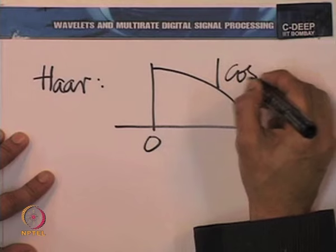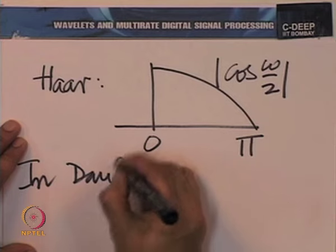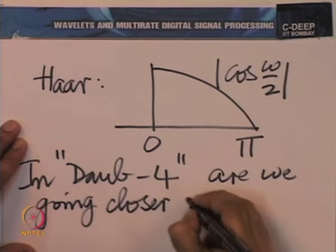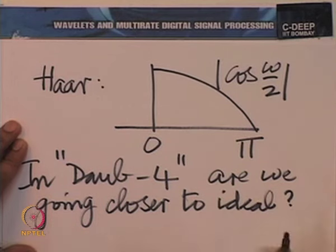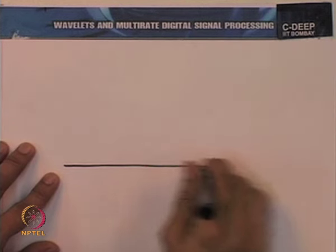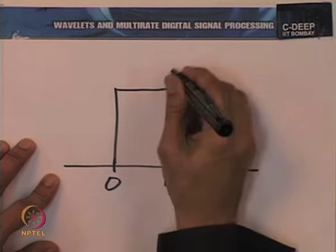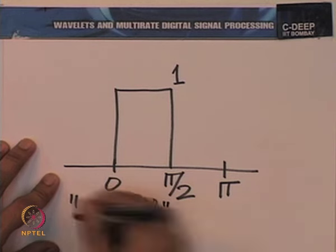The idea is to compare it with the frequency response of the Haar filter. The Haar gave essentially a cos(ω/2) kind of response between 0 and π. In Daub4, are we going closer to ideal? The ideal is an ideal low pass filter with cut-off at π/2.